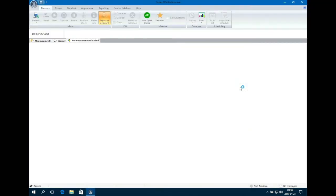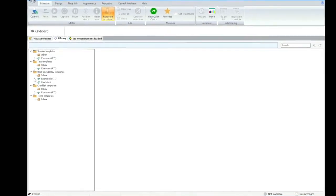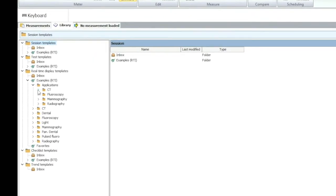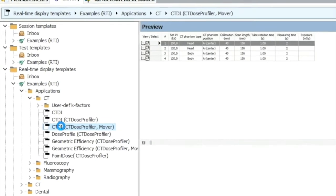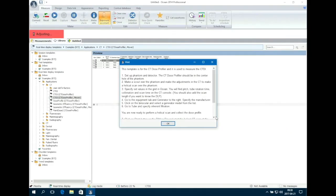For this measurement we will be using an existing template in Ocean. Open the library tab and go to real-time display templates and extract examples RTI applications CT. Choose CT DI CT dose profiler mover. A hint will appear. When ready click OK.